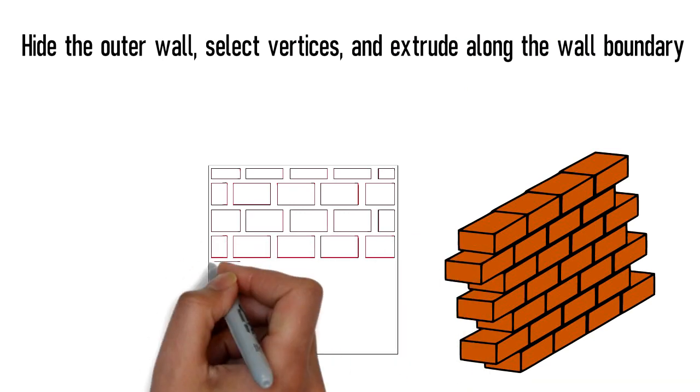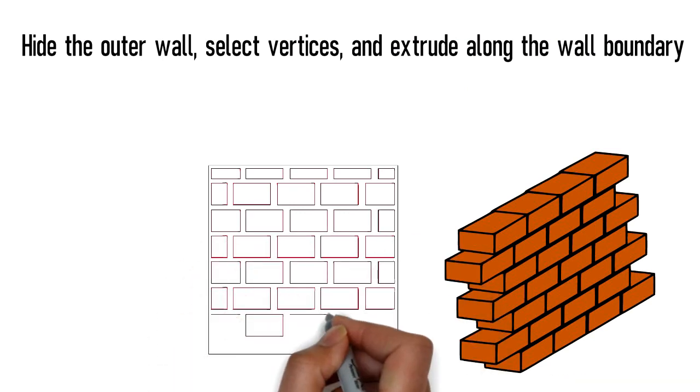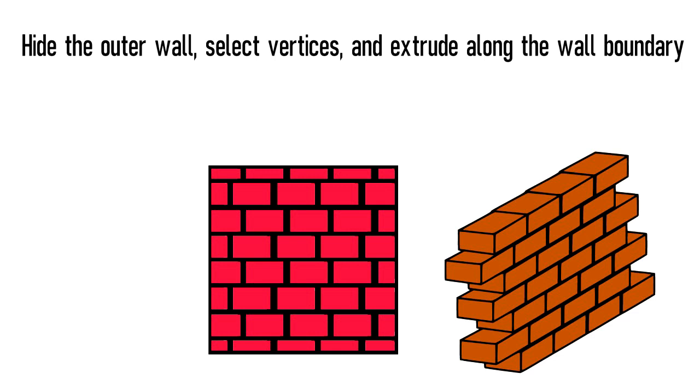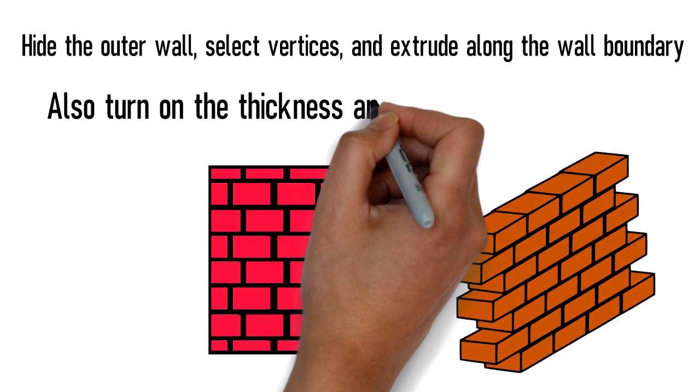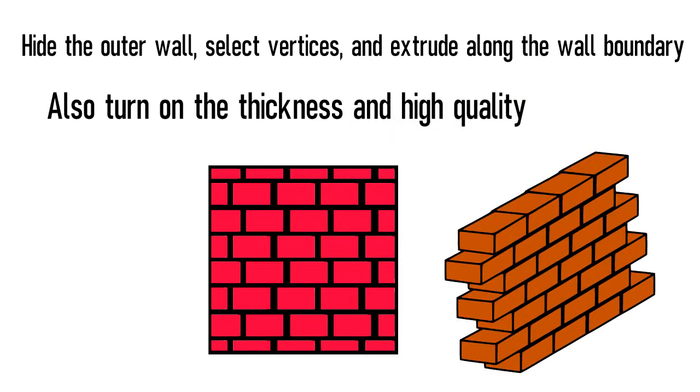because when we add solidify modifier, it will create thickness along the sides. Add solidify modifier and change the thickness to a certain unit of measurement. Also turn on even thickness and high quality, because we want the same thickness throughout.